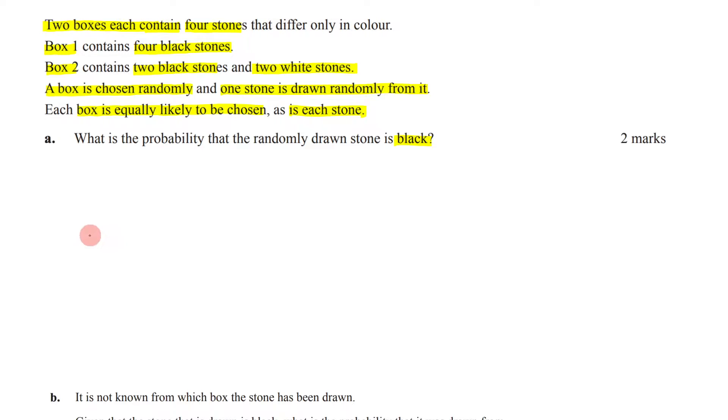The first thing that you're doing is you're either selecting box one, or you're selecting box two. And you know that these are equally likely. So a box is equally likely to be chosen. So that means that's a half, and that's a half. And then from each box, you're then selecting a stone from it.